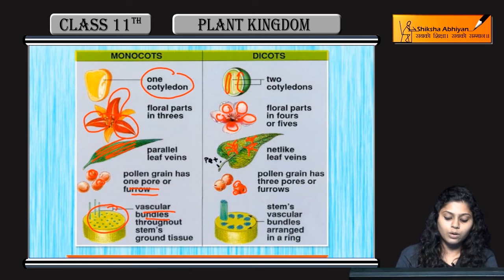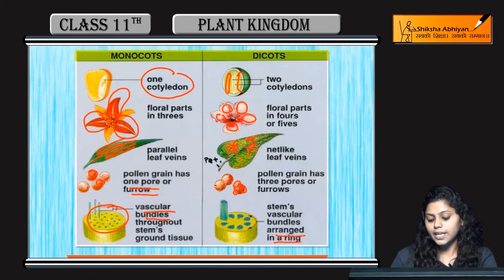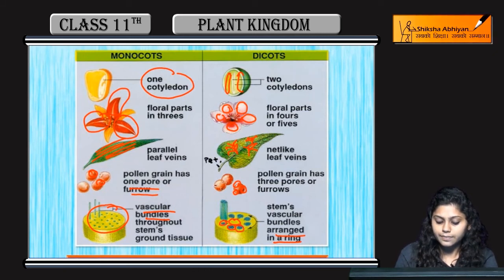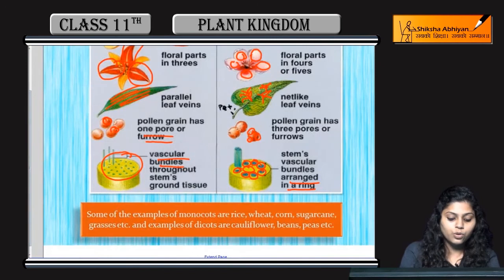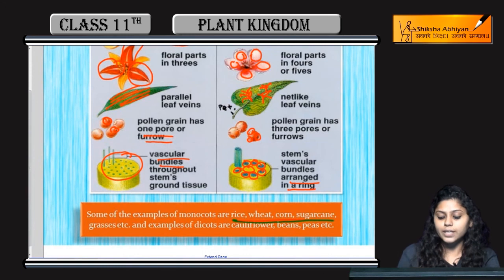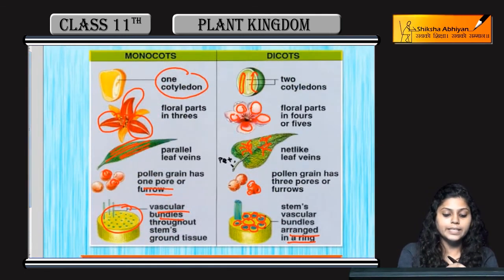The vascular bundle arrangement in monocots is scattered throughout the ground tissue of the stem, whereas in dicots the vascular bundles are arranged in a ring-like pattern. Examples of monocots include sugarcane, and dicots include cauliflower, beans, and peas.